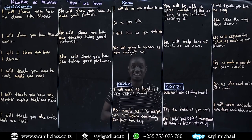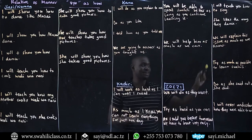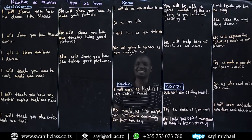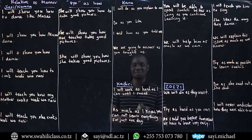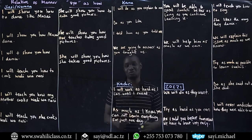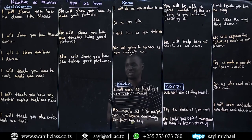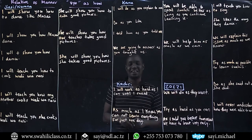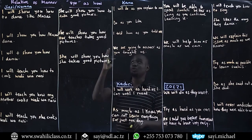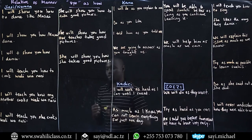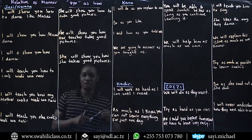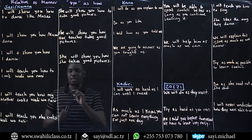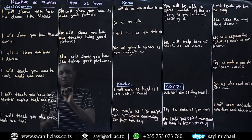Nina tumaini utaweza kutafsiri sentences zote — I hope you'll be able to translate all those sentences by yourself after learning. Okay, so that is vio. Vio is my topic.